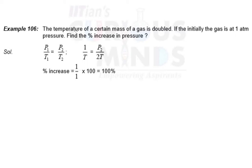Hi friends, let us solve this problem. The temperature of a certain mass of a gas is doubled. If initially the gas is at 1 atm pressure, find the percent increase in pressure.